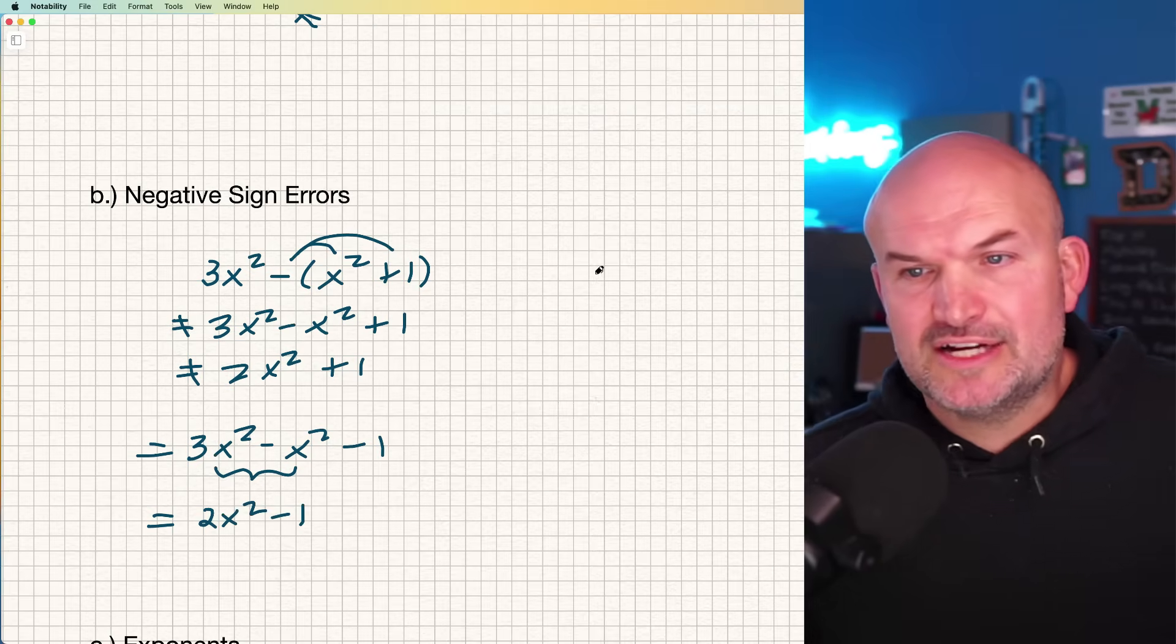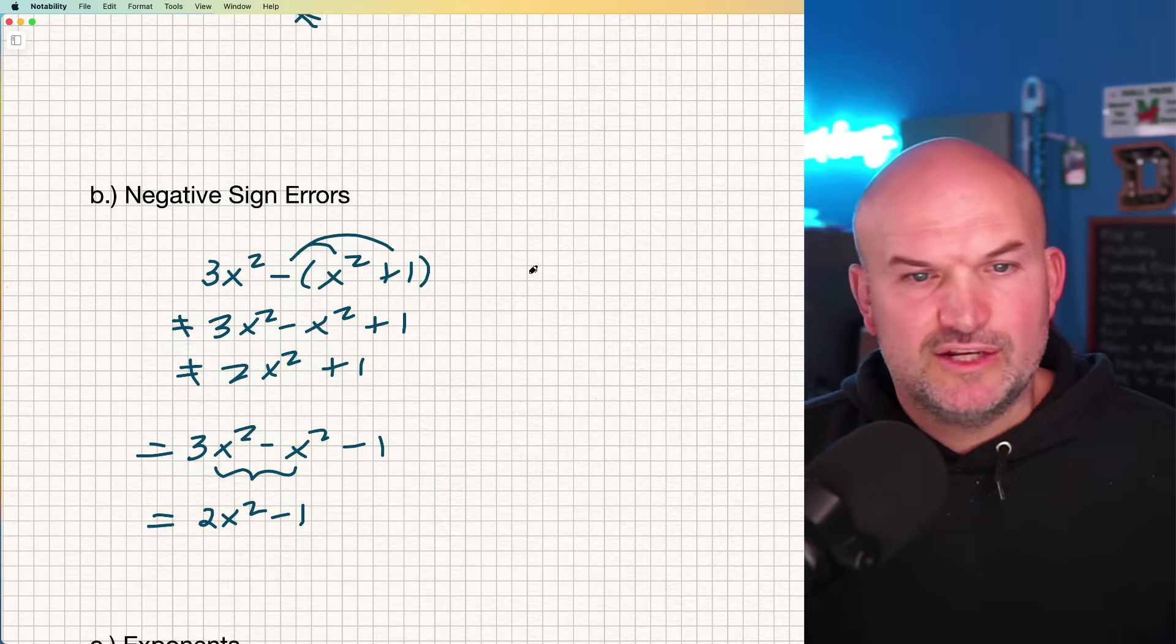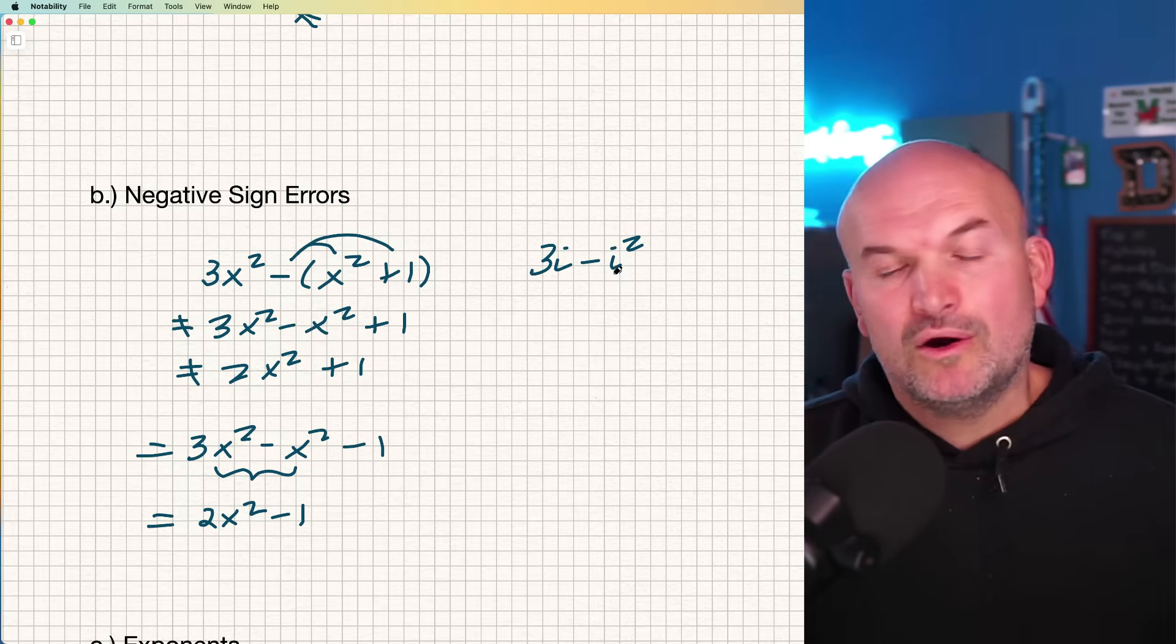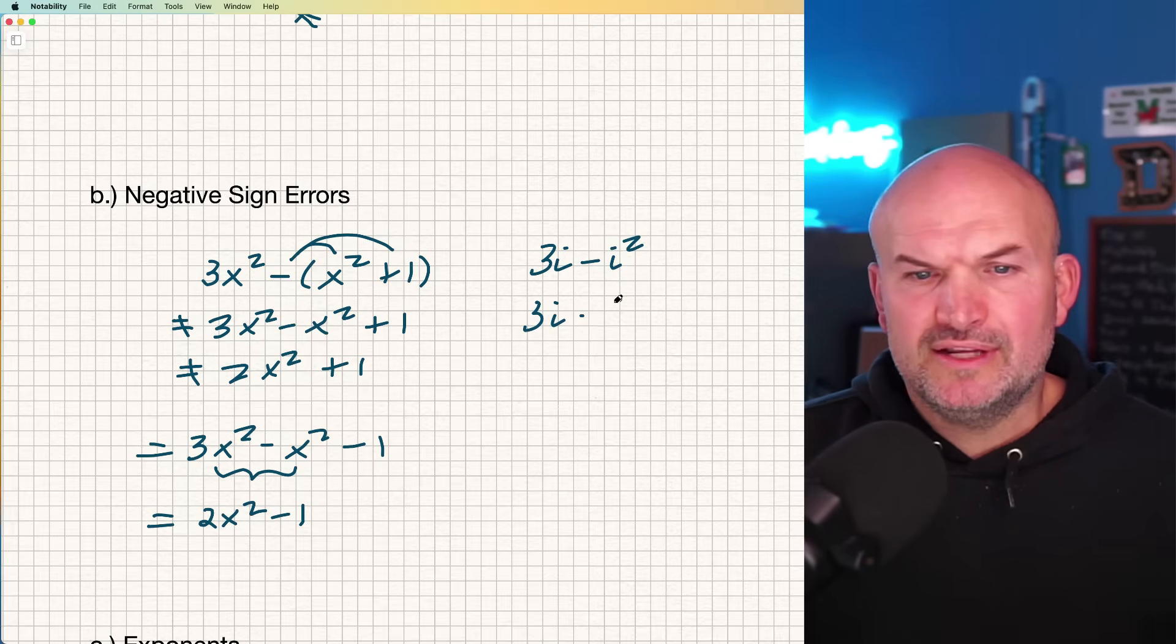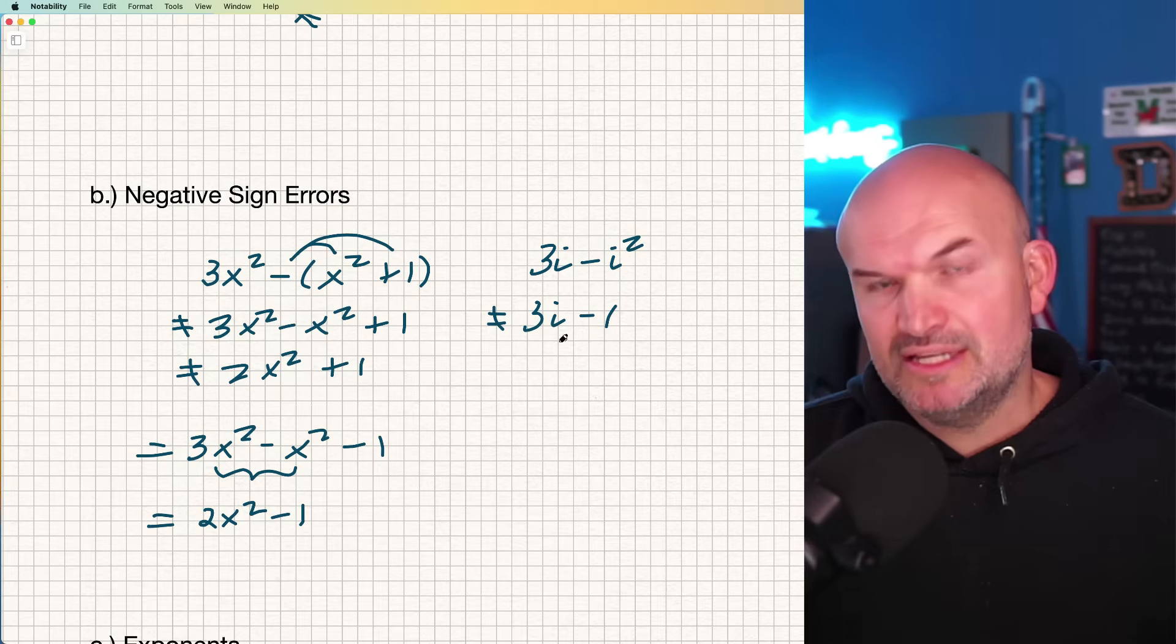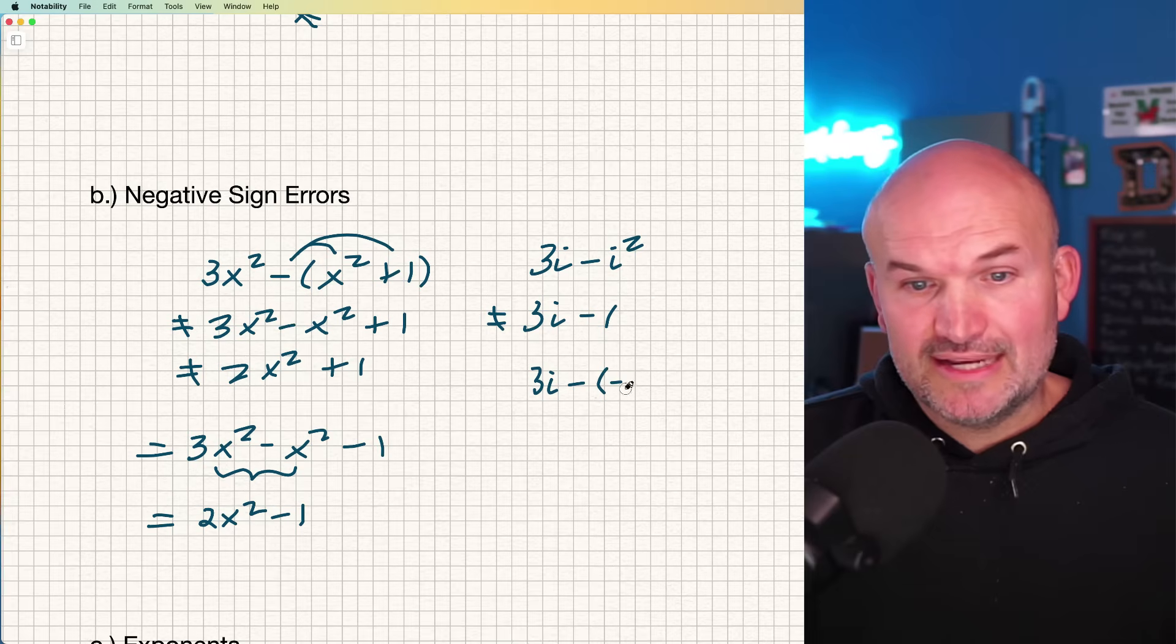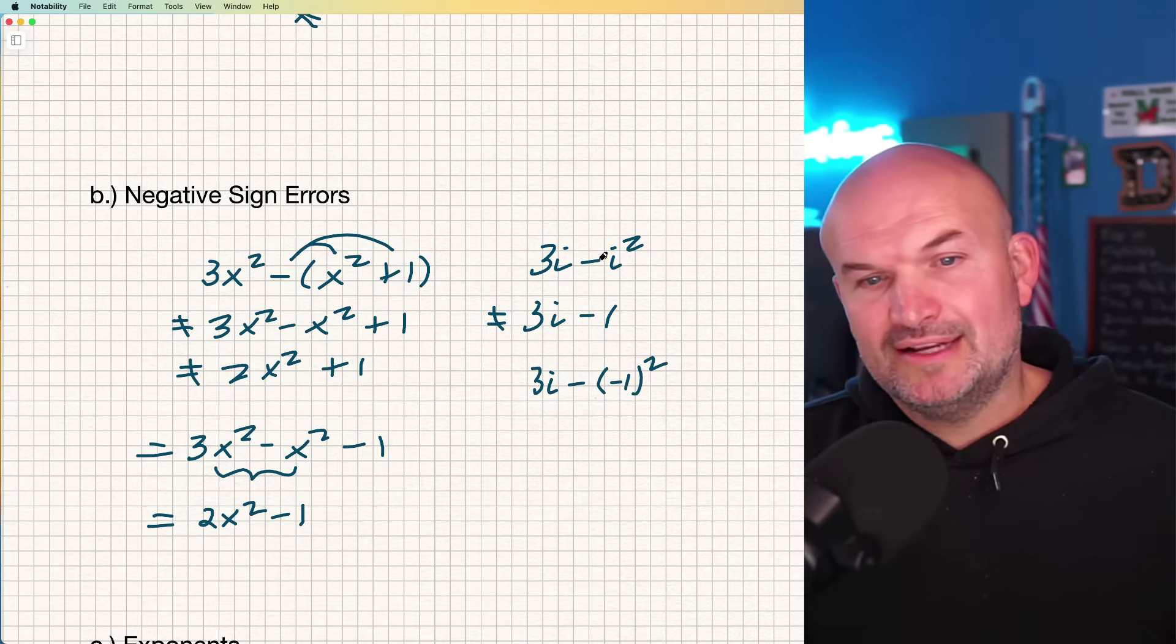Another way this comes up is when we're dealing with imaginary numbers. Like if I have 3i minus i², just remember, ladies and gentlemen, i² represents negative one. A lot of times students will say it's negative one and just write it like this. No, ladies and gentlemen, use your parentheses.